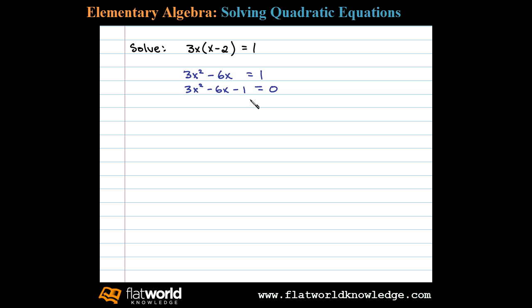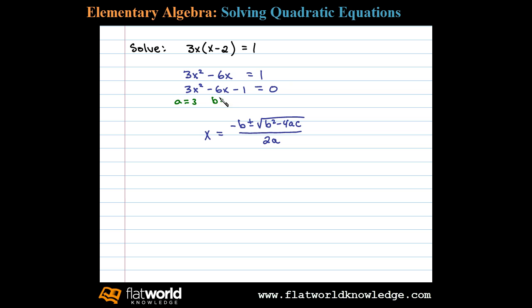We can solve this quadratic equation using the quadratic formula: x equals negative b plus or minus the square root of b squared minus 4ac, all divided by 2a. Now, in this case, a is equal to 3, b is equal to negative 6, and c is equal to negative 1.